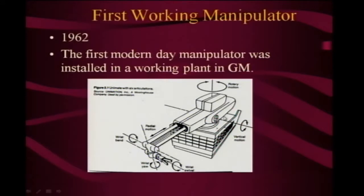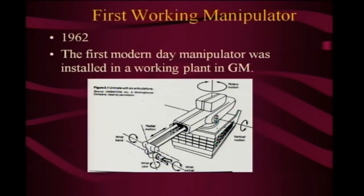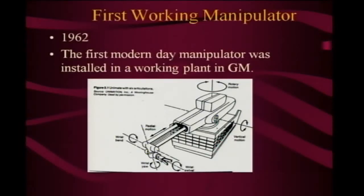You can see this whole turret rotating about the base — there is this axis. Then this one rotates about this axis. This is the translating axis. And then there are these three axes at the wrist: rotation about this axis, rotation about this axis, and a third rotation. So you get six degrees of freedom. In space there are six degrees of freedom — three rotation and three translation — so this could achieve any orientation and position within the workspace.